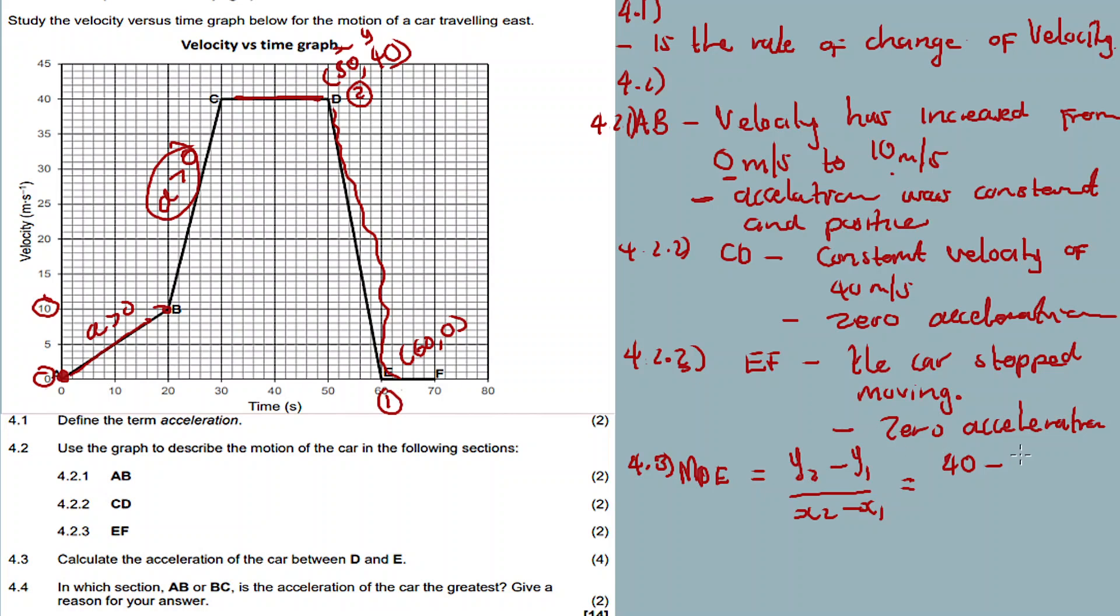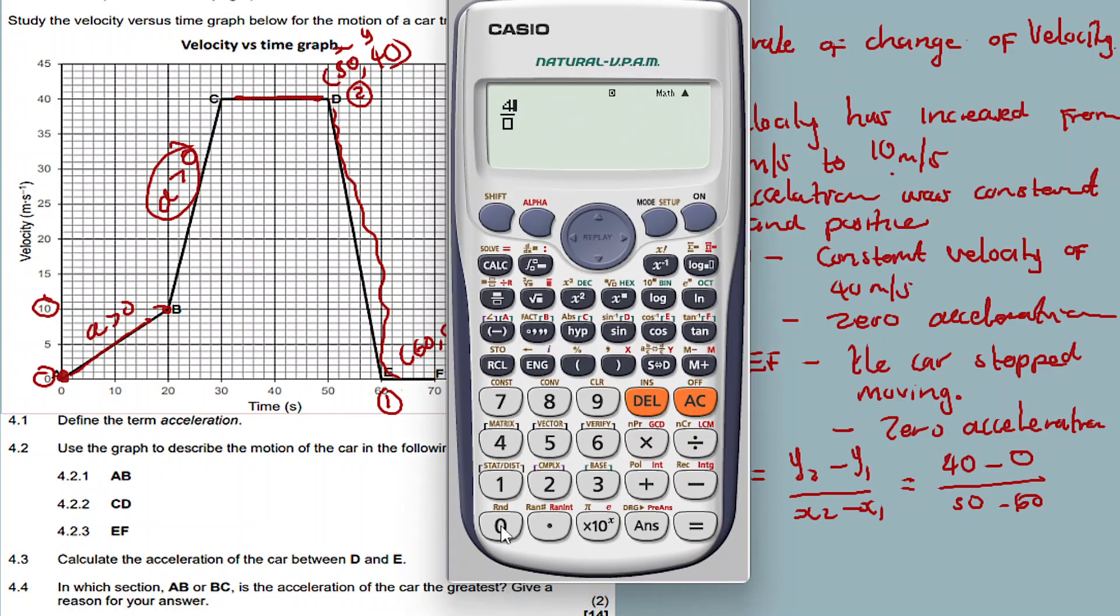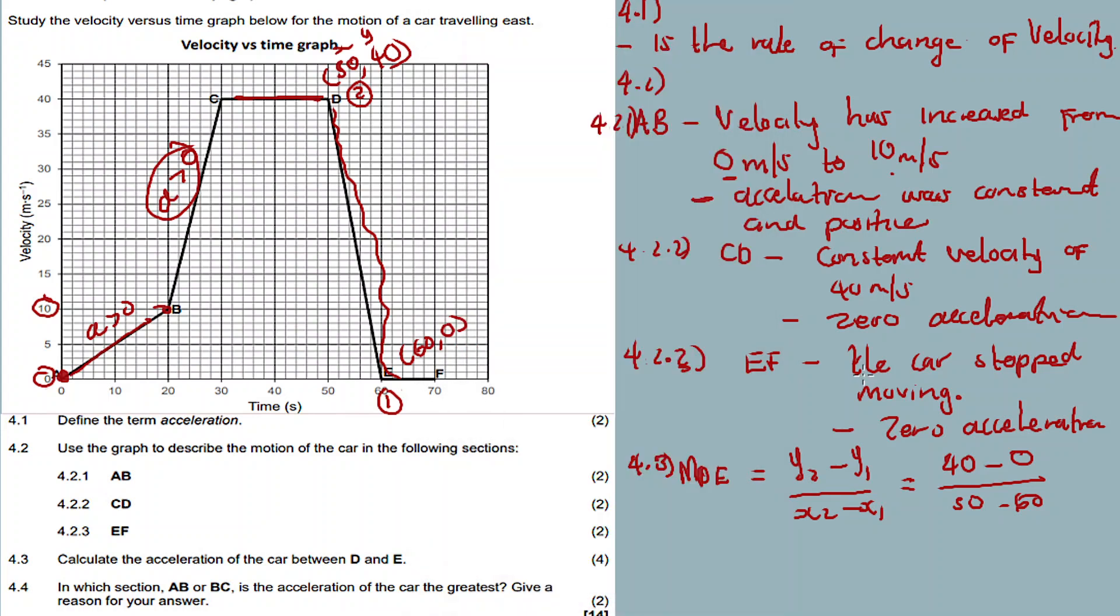So y2 is 40, y1 is 0, divided by x2 is 50 - so 50 divided by 60. So it's minus 60. Then we see 40 minus 0 divided by 50 minus 60, equal to negative 4. So the answer is negative 4 meters per second squared.